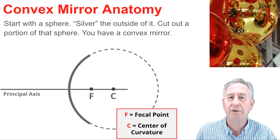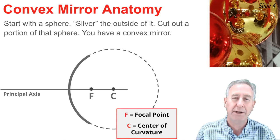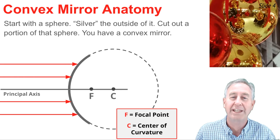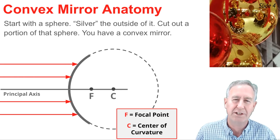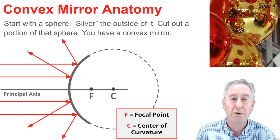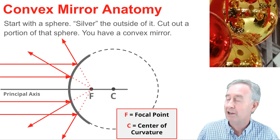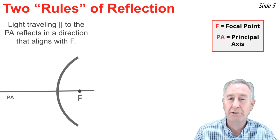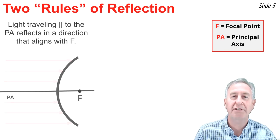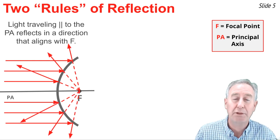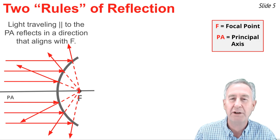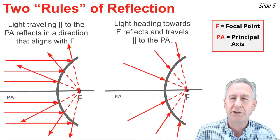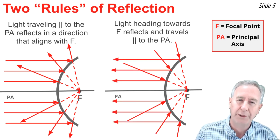For concave mirrors, we know that the focal point is the point where rays of light traveling parallel to the principal axis will focus. For convex mirrors, it works slightly differently because the focal point is inside of that sphere or on the opposite side of the mirror. So light that is reflecting can't pass through the focal point — instead it reflects in line with the focal point. The two rules of reflection for convex mirrors are similar to those for concave mirrors. The first is that light traveling parallel to the principal axis will reflect off the mirror in line with the focal point. The second rule is kind of the opposite: light that is heading towards the focal point will reach the mirror first and then reflect parallel to the principal axis.